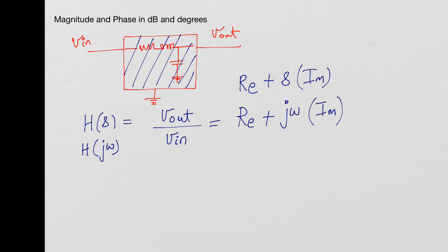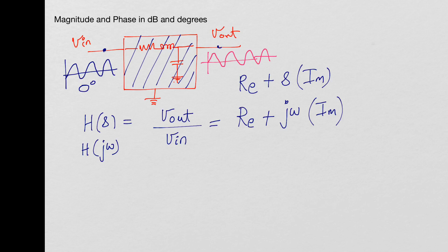Now, how do we calculate the magnitude and phase? Phase means the phase difference between the input signal and the output signal. We assume the input sinusoidal signal has a phase of zero as our reference. The output signal could be ahead or lagging in phase — for example, it might have a 45-degree phase difference.